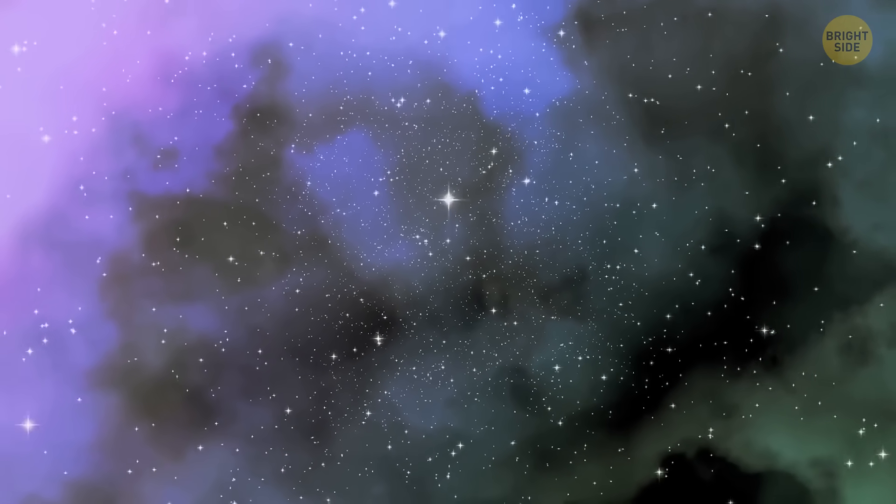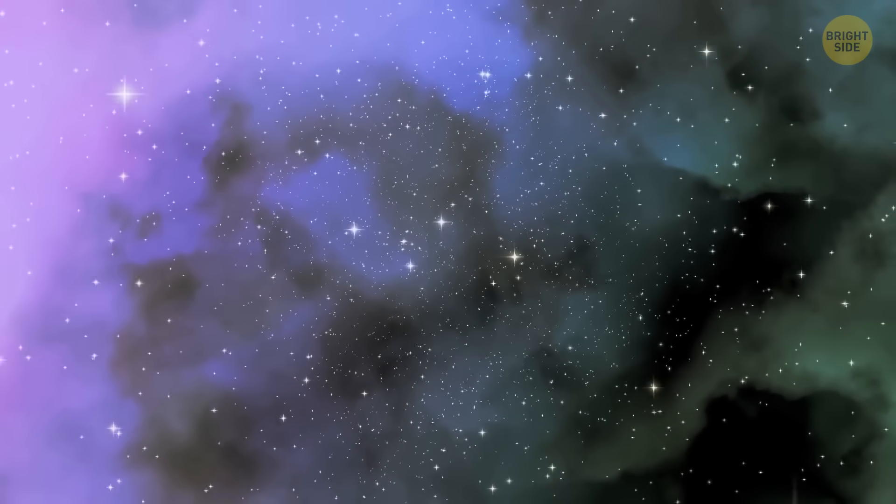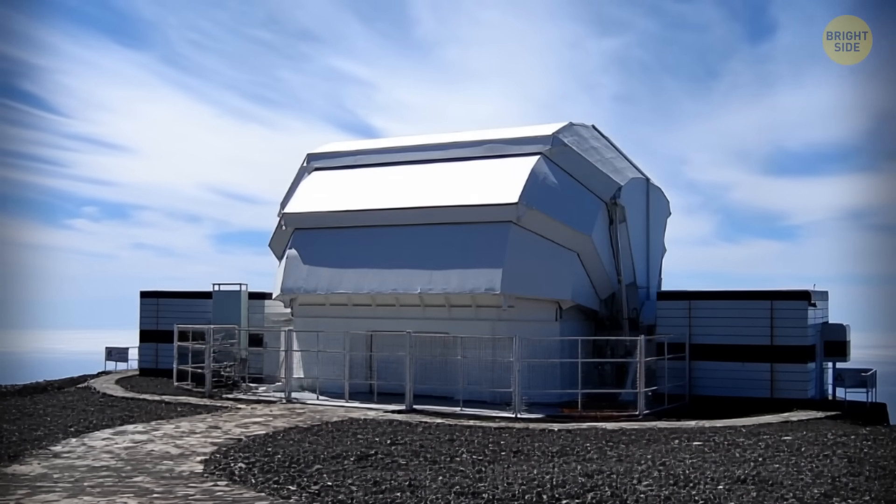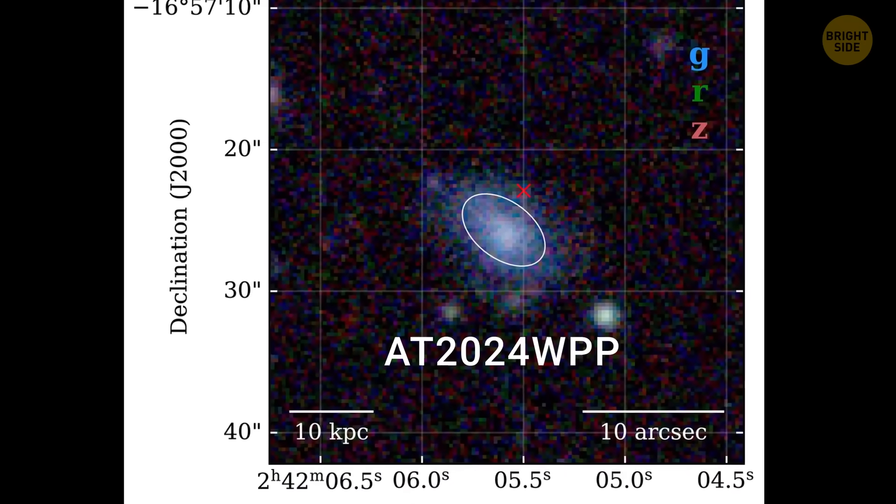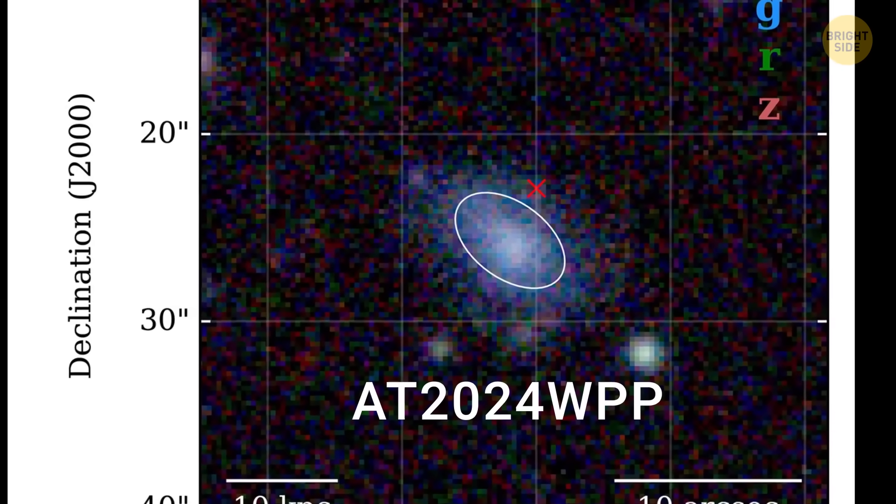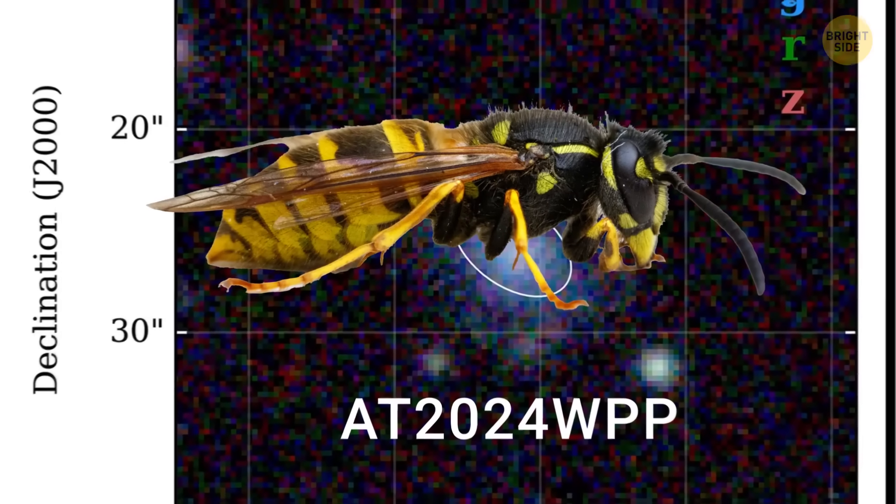But after that, you need to know that a new LFBOT has shown up in space. It was spotted by a telescope in Liverpool, and is currently called AT 2024 WPP. Yep, scientists still haven't picked an animal name, but they're thinking maybe the wasp. What do you think of this name? Share it in the comments!